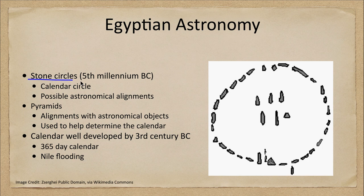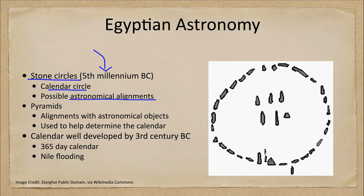We actually find stone circles — in fact some of the very oldest stone circles known in existence — and these date back to the 5th millennium BC, so we're talking 7,000 years ago, and they probably were calendar circles to help determine time and had possible astronomical alignments. These are very difficult to interpret because stone circles don't have any directions left with them as to how they were intended to be used, so we're left to interpret based on what we see today.